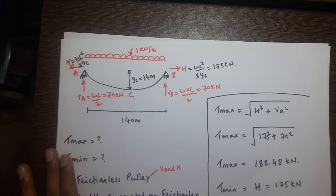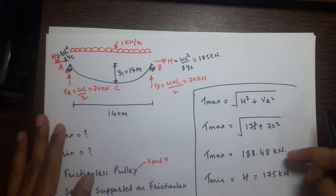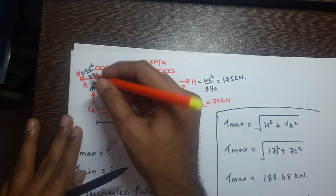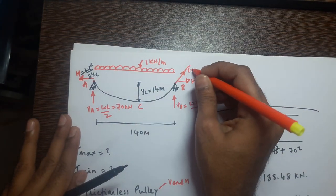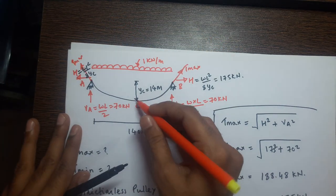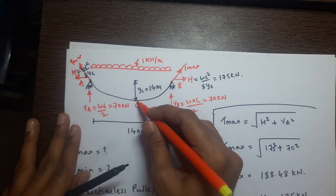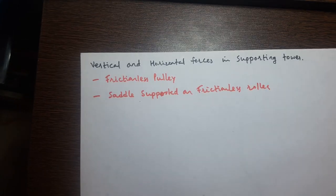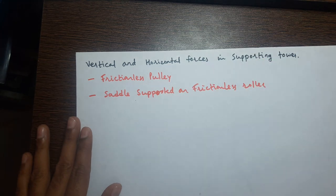To summarize the tension locations: for a symmetrical cable under symmetrical loading, maximum tension is at the support, and minimum tension is at the lowest point of the cable at point C.